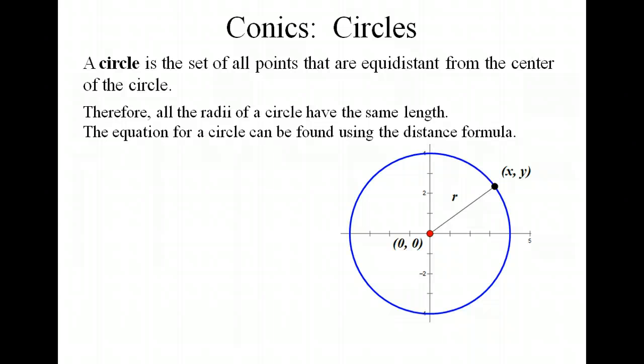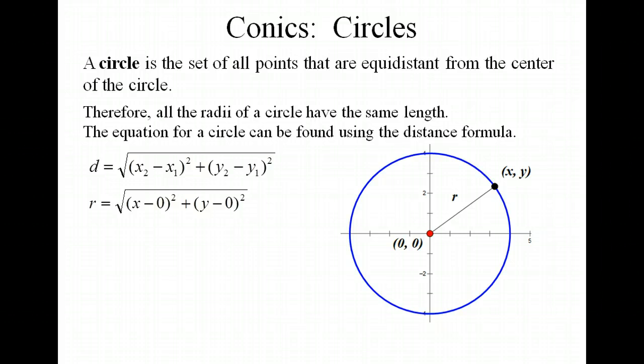We've drawn a point (x, y) on the circle, and that could be any point that is on the circle. And our radius length is r. So starting with our distance formula, we're going to replace D with r, and plug in the endpoints of our radius. So we have (x, y) as one endpoint, and (0, 0) as the other.